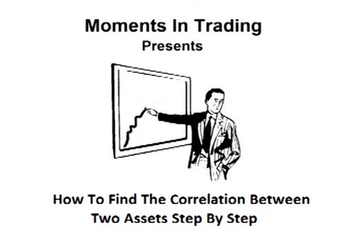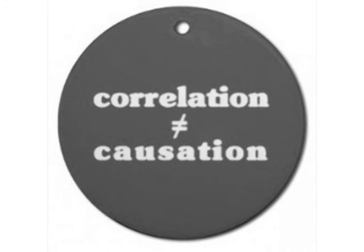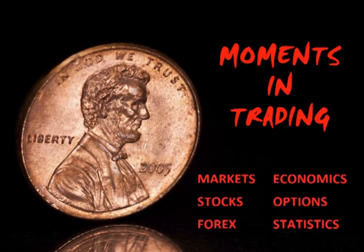So that is how to find a correlation between two assets step by step. Correlation is a useful tool in many areas. However, it is important to remember that correlation does not imply causation. In other words, just because two assets are correlated does not mean that the movement of one asset is causing the movement of the other asset. I hope you enjoyed this video. Thanks for watching.